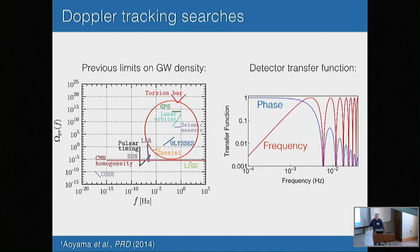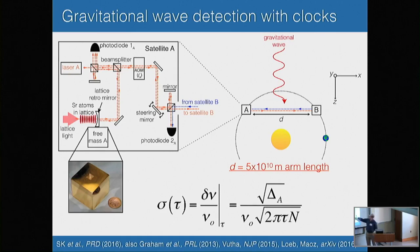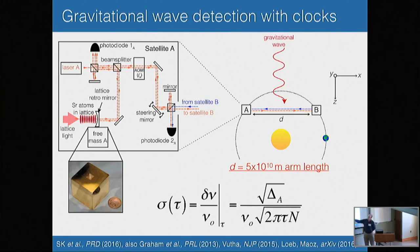Considering those two factors, we proposed a very long arm length — more than an order of magnitude longer than LISA — style detector, where you have two spacecraft, each with an optical lattice clock on board. You send a laser from one spacecraft to the other. As a gravitational wave passes by, it moves the spacecraft with respect to each other, giving a Doppler shift. When you compare the laser in one spacecraft versus the other, you get a different detuning of that laser with respect to your atoms on board, and that's what you use to detect the gravitational waves.